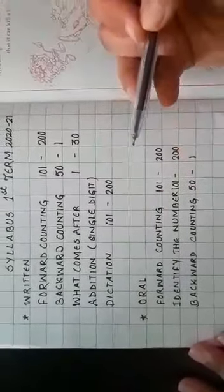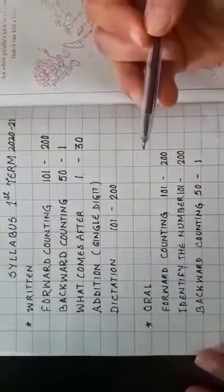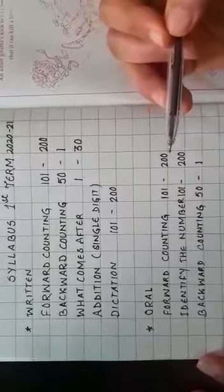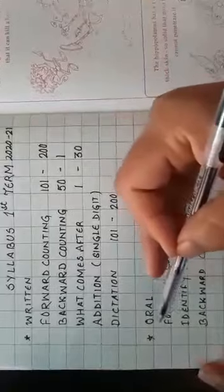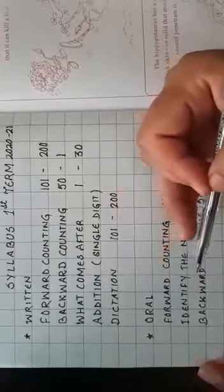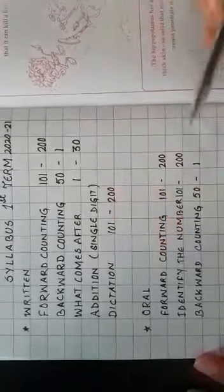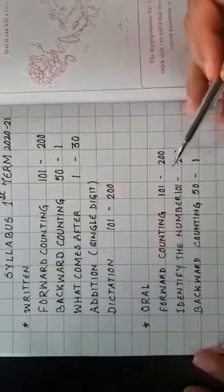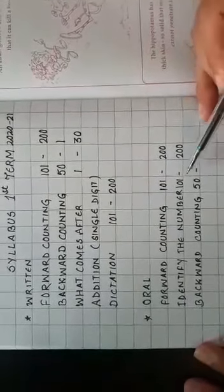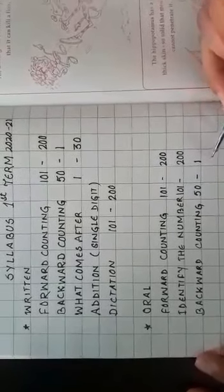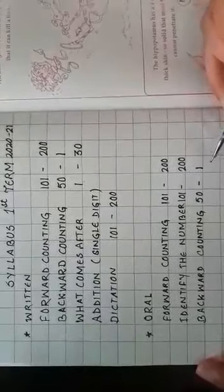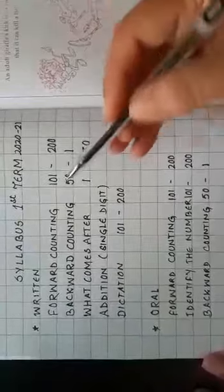Dictation of forward counting that is 101 to 200, and in the oral part, as I told you earlier, whenever you are doing your writing work you have to say and write. Then only you are going to be confident on the oral part.